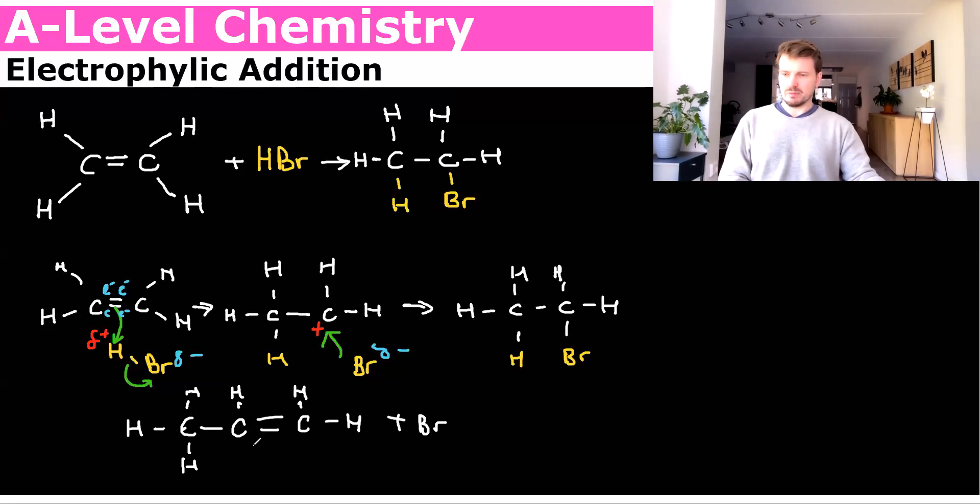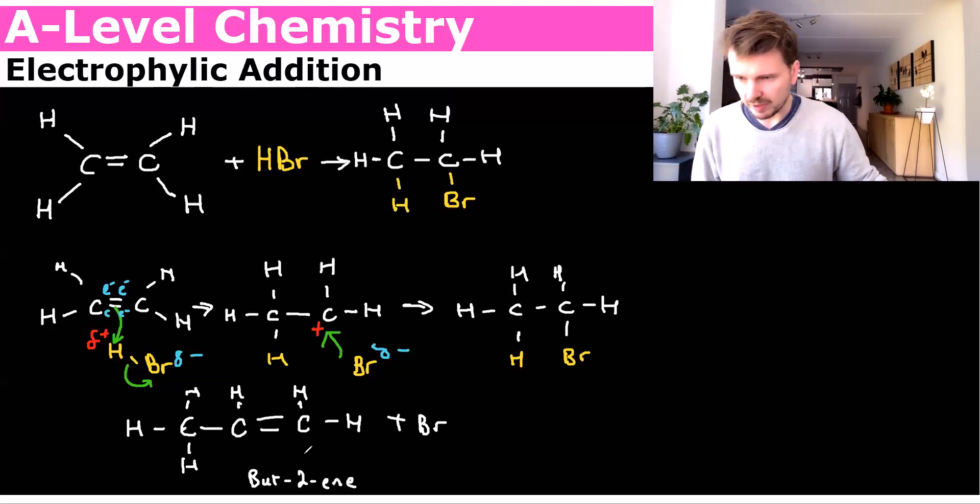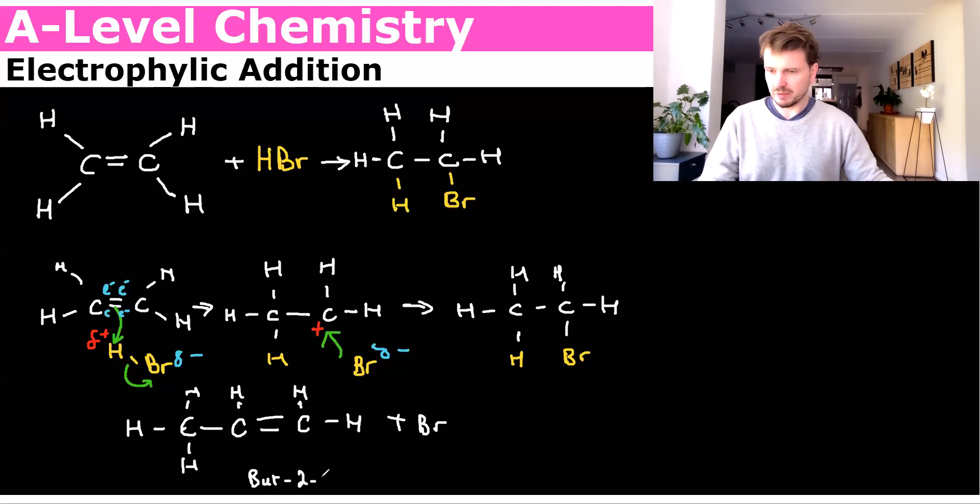This would be but-2-ene, right? But-2-ene, because I've got the double bonded carbon. Oh no, it's actually just going to be butene. Because we're going to count from the left. So it'll be one, two, three. Okay. So it's just butene.